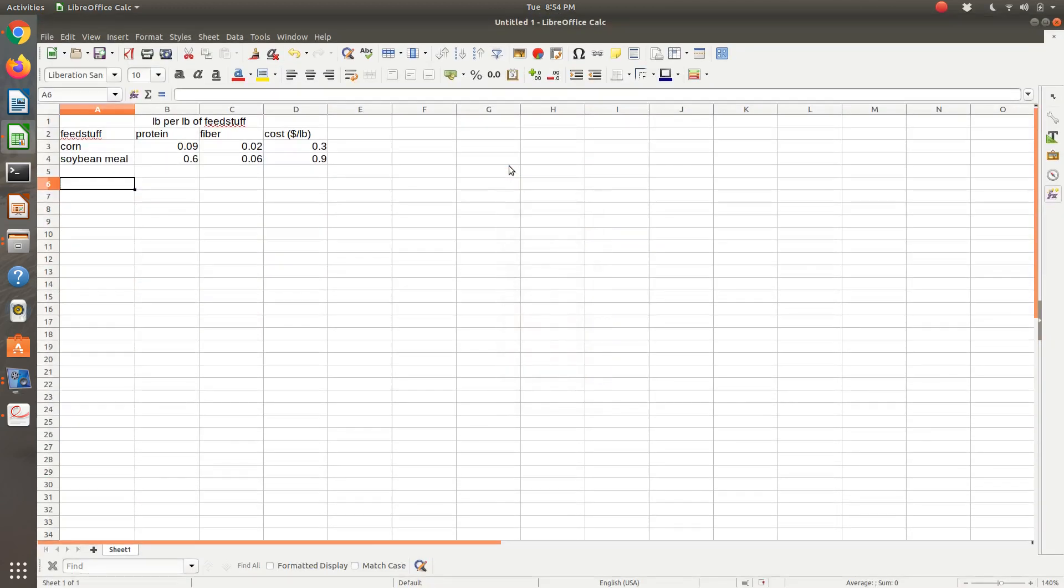So for my table, I have feedstuff, corn and soybean meal, pounds per pound of feedstuff in terms of protein and fiber, our total cost, and then I'm just going to add a column for pounds used. And so these are going to be my variables, x1 and x2, which I'm solving for. And since I'm using LibreOffice Calc or Excel with Solver, I need to start with initial guesses.